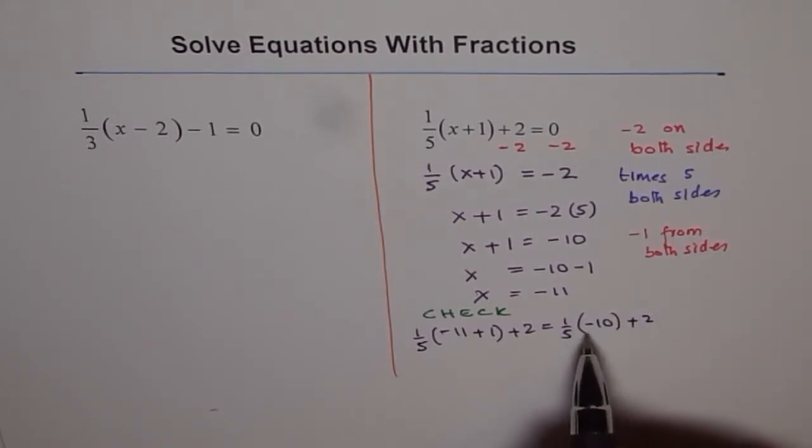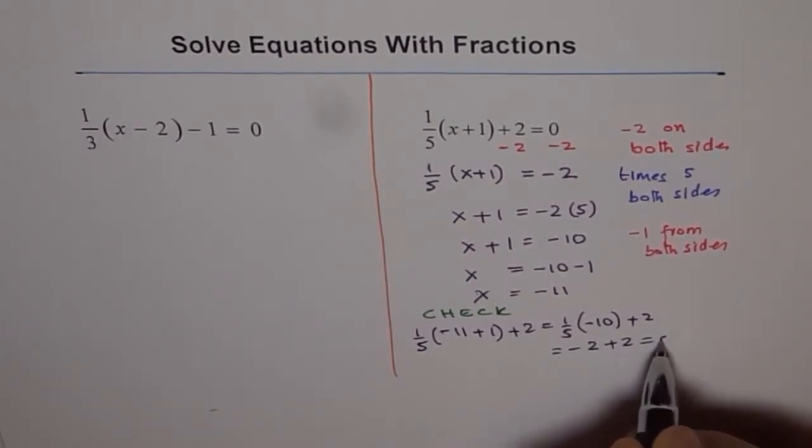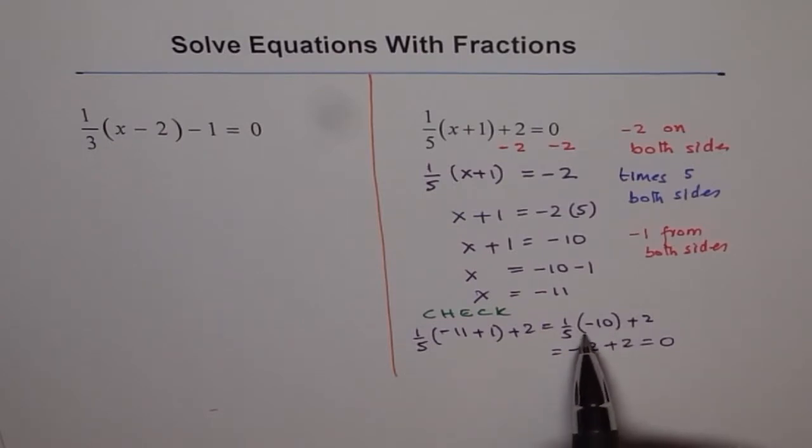Now, minus 10 divided by 5 is minus 2. So we get minus 2 plus 2, which is 0. See the importance of brackets. Now, you know it is minus 10 divided by 5 or it is 1 over 5 times minus 10. It is not 1 over 5 minus 10. Sometimes students may make that mistake. So you don't do that mistake. So you understand how it should be treated.